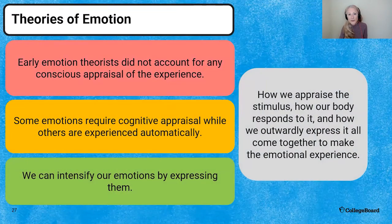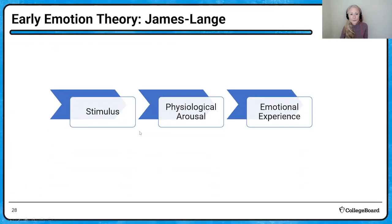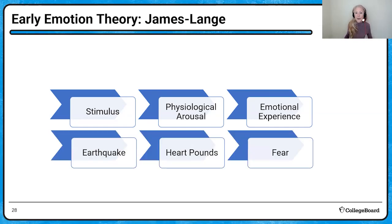Moving on to theories of emotion. The very early emotion theory by James-Lange said that if there was some kind of stimulus that produced a physiological arousal, you'd have an emotion. For example: there's an earthquake — your heart pounds — you feel fear. Stimulus, arousal, emotional experience. Pretty basic.